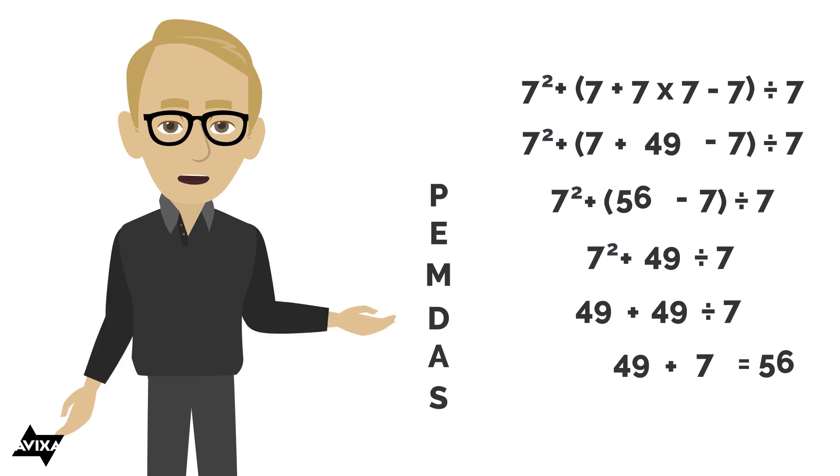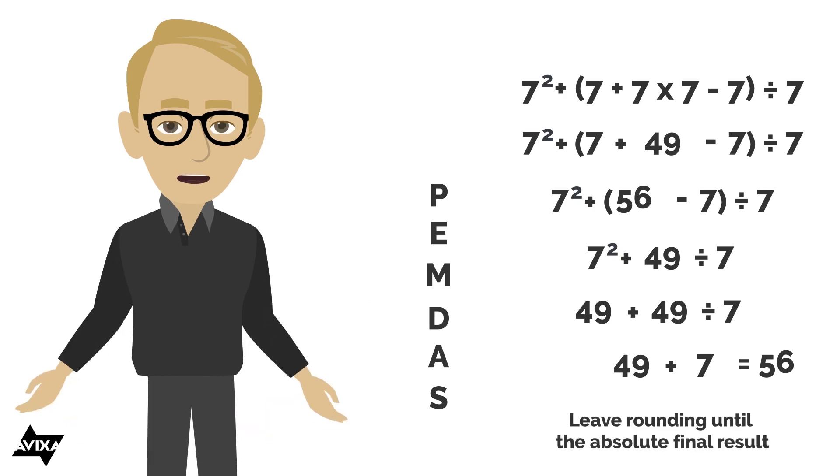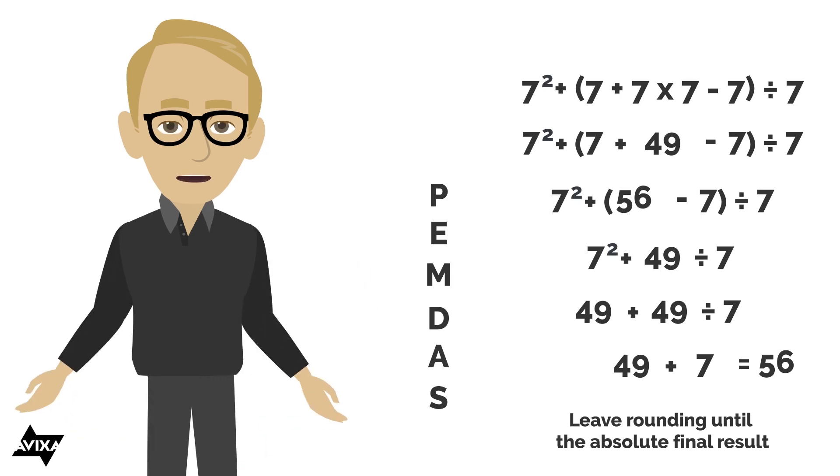The other thing when you do equations, not in this example, but if you have any rounding, the rule there is to leave any rounding until the absolute final result, so that you don't end up with any rounding errors. So there's two things there. Follow PEMDAS and leave any rounding until the very end.